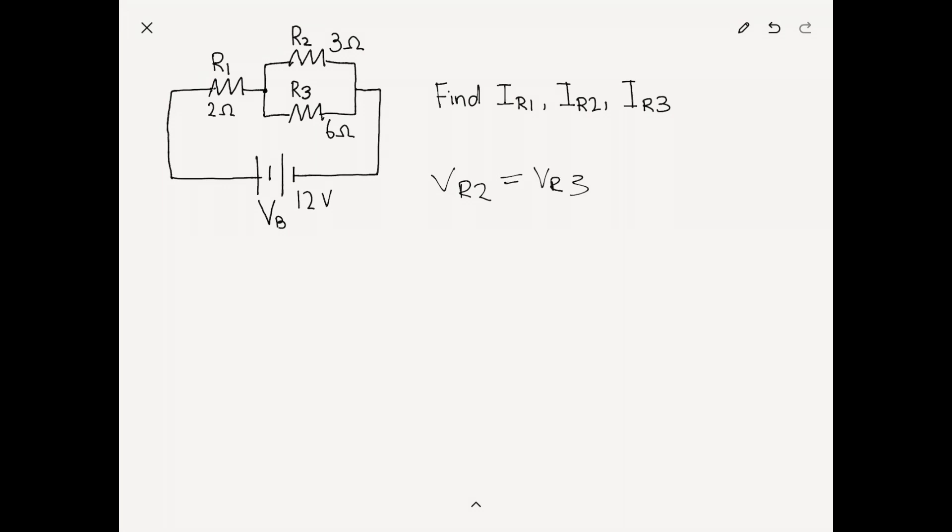And by Ohm's law, we have the current at R2 times R2 equals the current at R3 times R3. We can also take use of the fact that the current coming in from R1 is the current going into R2 and R3, so we have current at R2 plus current at R3 equals the current R1.